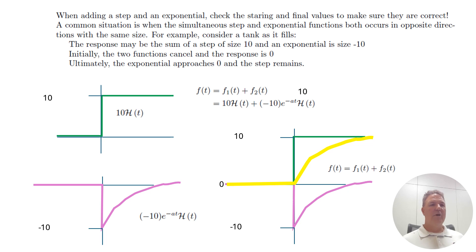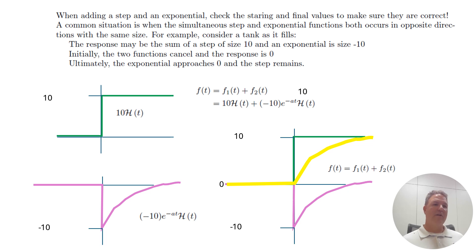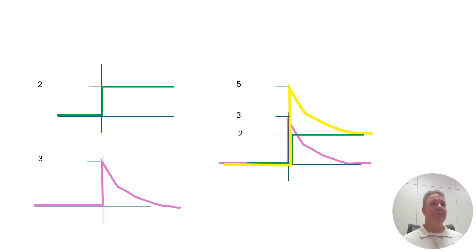Remember: look at the exponential — sometimes it curves toward zero from above (positive size, decaying down), and sometimes it curves upward (negative size, like a tank filling). If it's a positive-size exponential it curves down from one to zero; if it's negative one it curves upward. You can have any combination of steps and exponentials of different sizes, positive and negative, sliding all over the place.